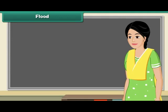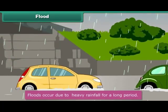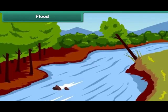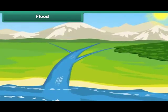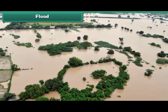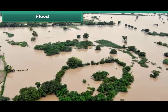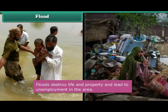Flood. Let me tell you about floods. Floods occur due to heavy rainfall. When it rains heavily, rivers overflow and submerge the surrounding areas. Water collects in houses, shops, roads, and farms and damages the properties. Floods destroy life and property.